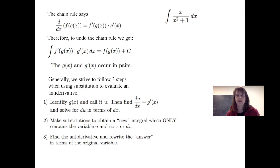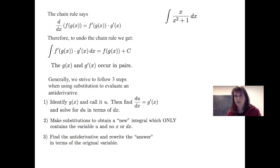Let's look at the integral of x over x squared plus 1 dx. When looking for something to apply substitution to, you want to look for something raised to a power, or something in the denominator — which becomes your g of x — and check if its derivative appears in the numerator. In this case, we let u equal x squared plus 1. The derivative of u with respect to x is 2x, and solving for du gives us 2x dx.